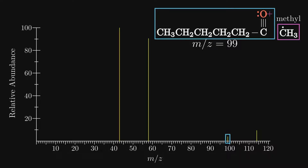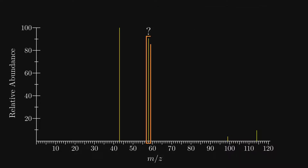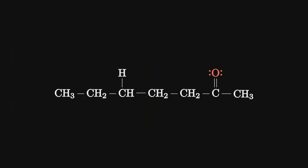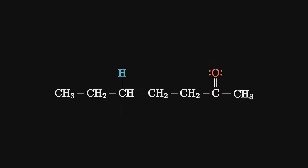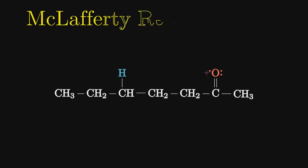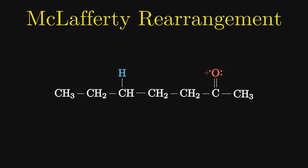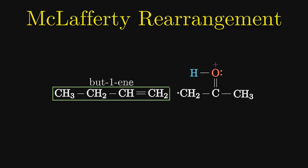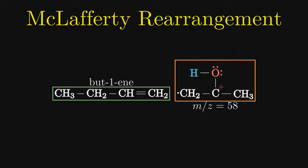Alpha cleavage is pretty standard, but it does not explain what is going on to produce a peak at 58. Like the loss of water from an alcohol, ketones — if the structure is right — undergo a special type of fragmentation. In this instance, it is because the alkyl group attached to the carbonyl carbon contains a gamma hydrogen. Where previously we considered the carbon with the functional group the alpha carbon, we actually start one position over. Once we find the gamma carbon and thus the gamma hydrogen, this special fragmentation — called a McLafferty rearrangement — occurs after ionization. The end result is an alkene, in this instance but-1-ene, which does not get detected, and a cation fragment of mass 58. This has the property where the charge is shared by more than one atom.